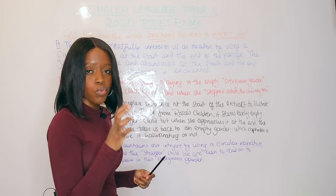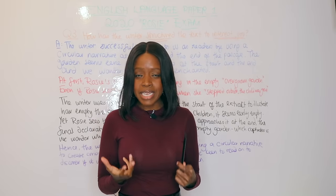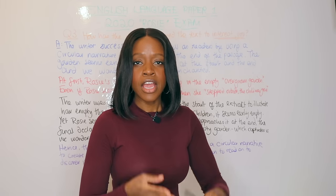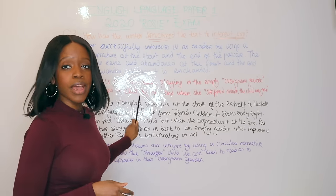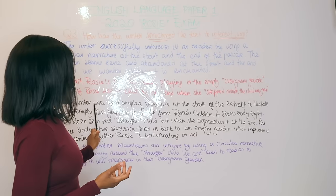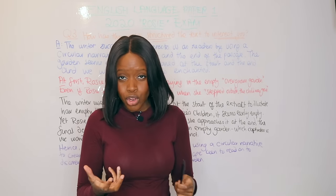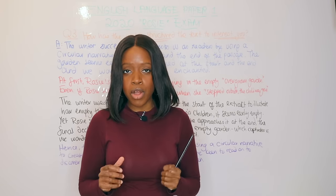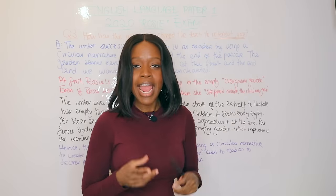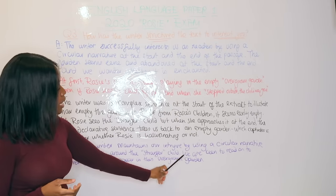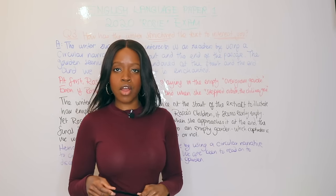My suggestion when writing a response to this is to adopt the PEEL paragraph structure. PEEL stands for Point, Evidence, Explanation, and Link. You open with your point — written in blue — then move on to your evidence — in red — then you add your explanation where you talk about structural technique and unpack it. That's the bulk of your marks. Then you end by linking it back to the question keywords — written in purple.